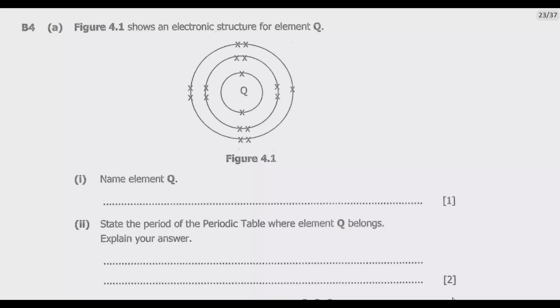Question B4(a). Figure 4.1 shows an electronic structure for element Q. Question 1: Name element Q. So how can we identify element Q? Element Q has this electronic configuration - it has 2 in the first shell, then it has 8 in the second shell, then it has 7 in the third shell.